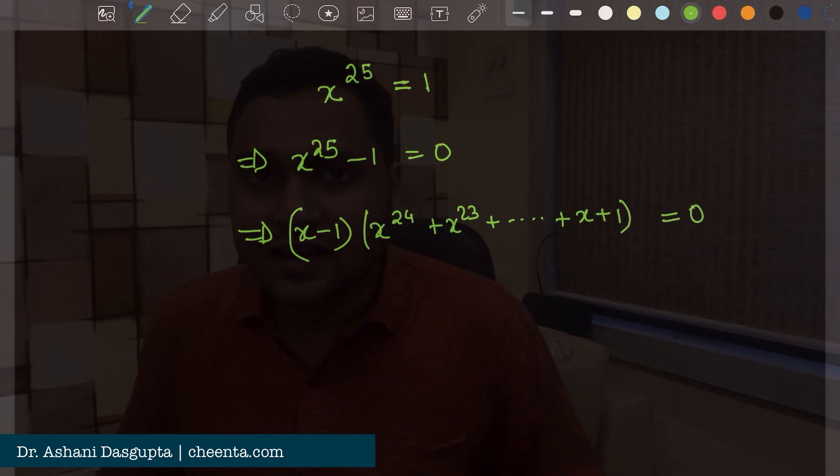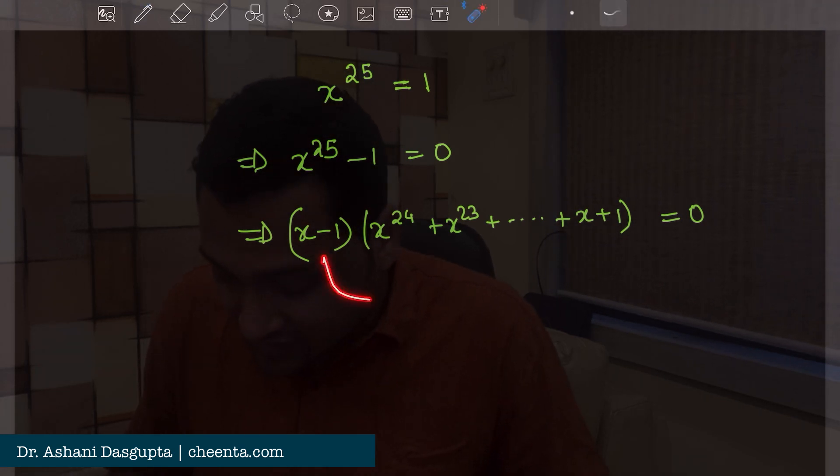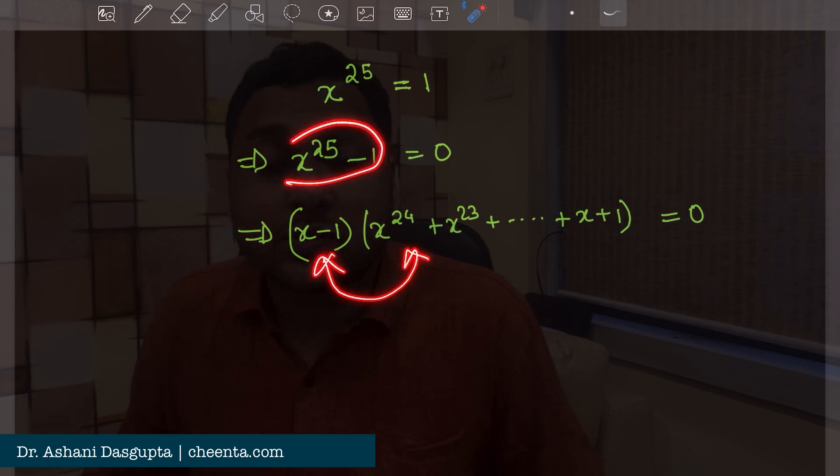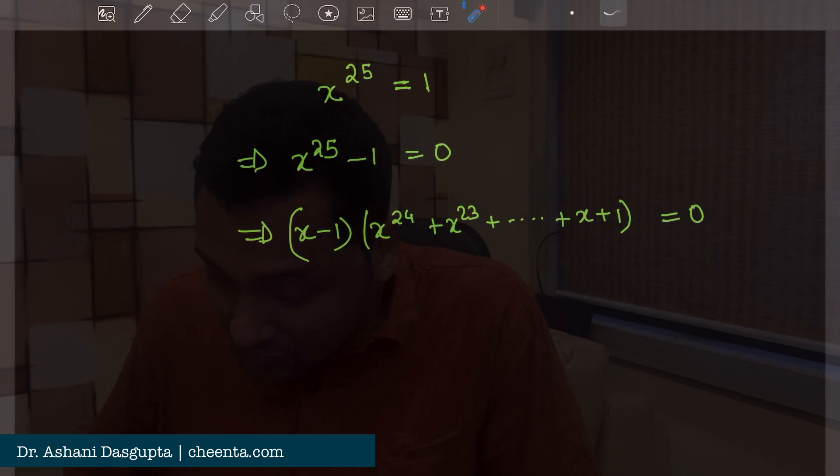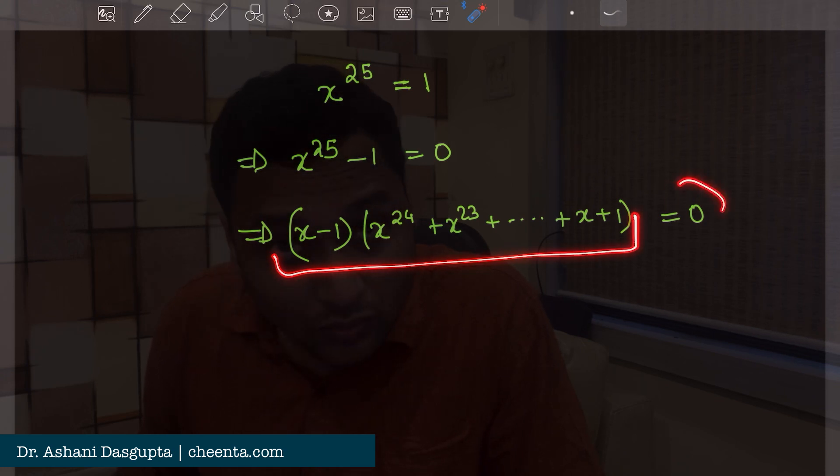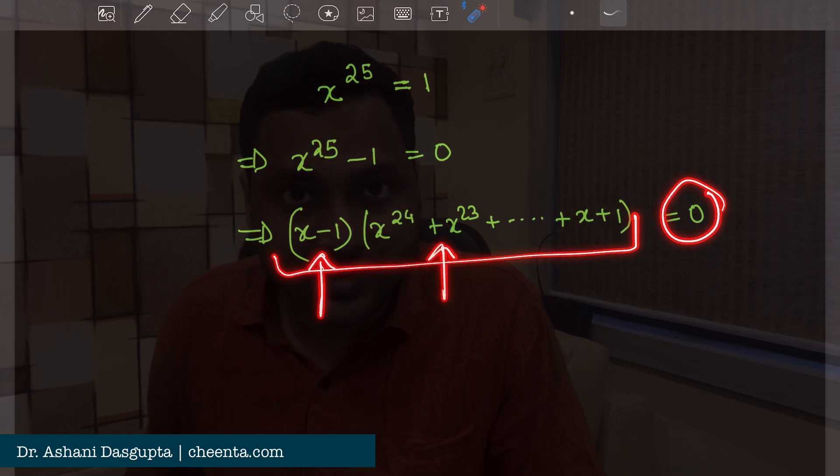And you can actually multiply this out and see that this is the case. That is if you multiply these two things you will get x to the power 25 minus 1 back. So now the question is to solve in order to make the left hand side 0, either this factor is 0 or this factor is 0.